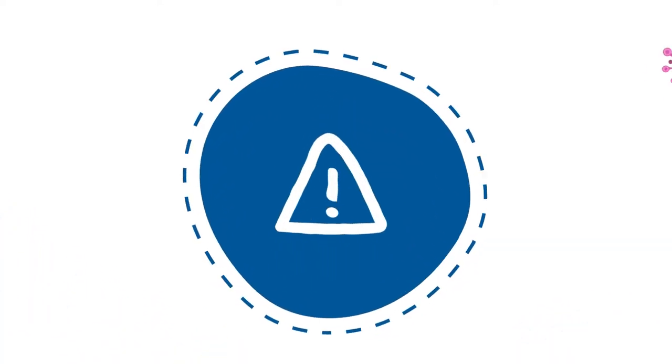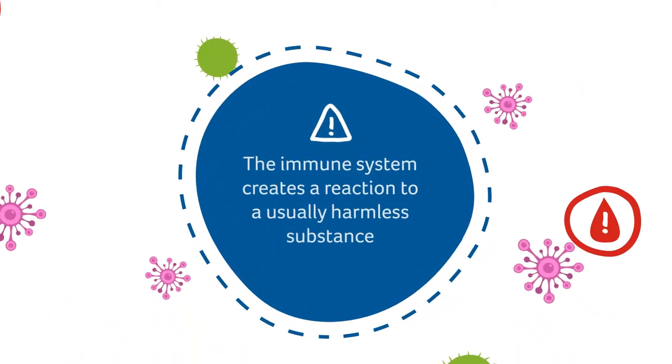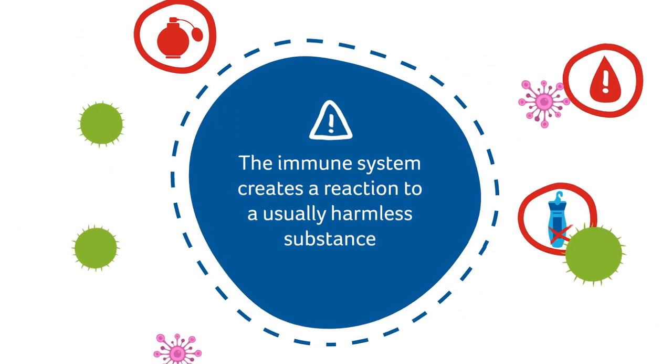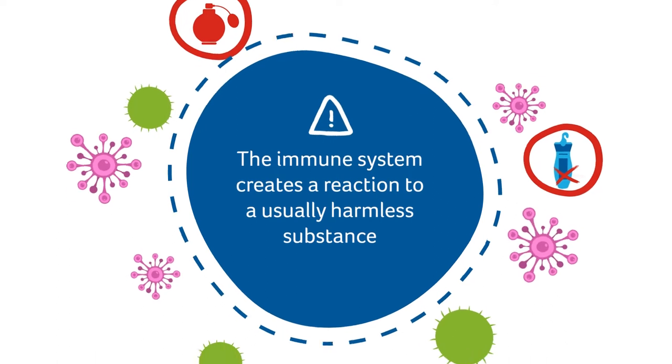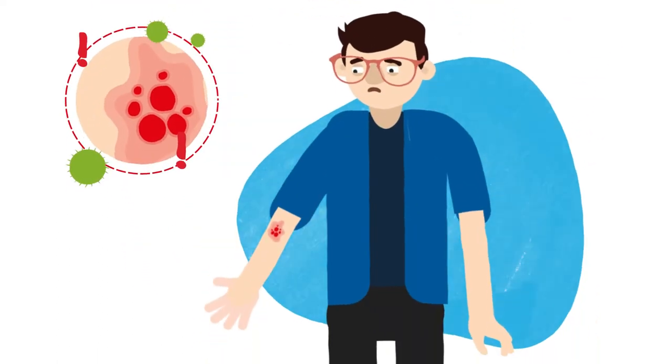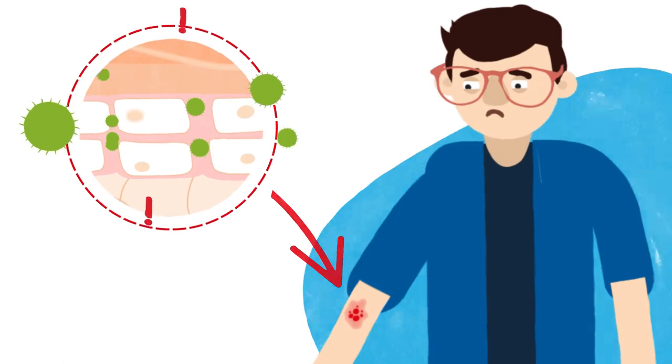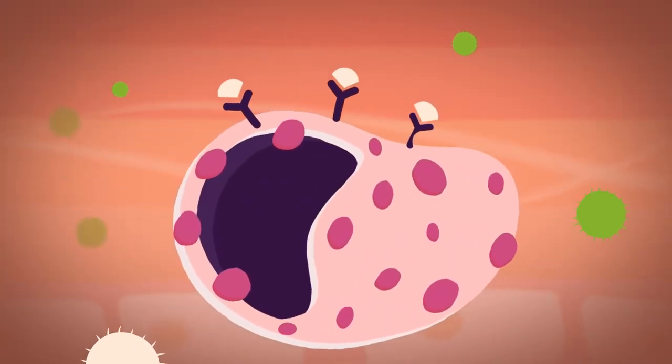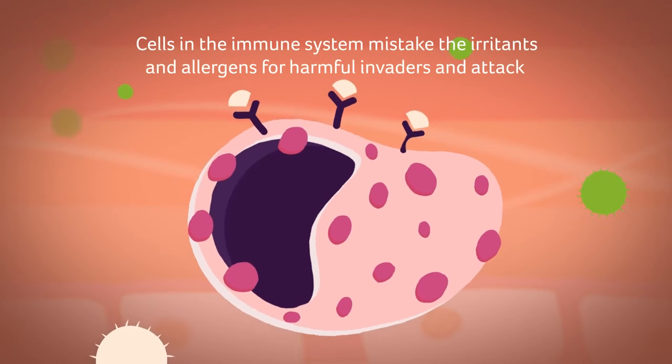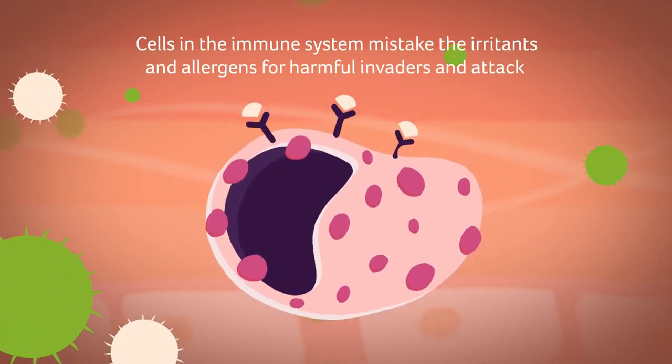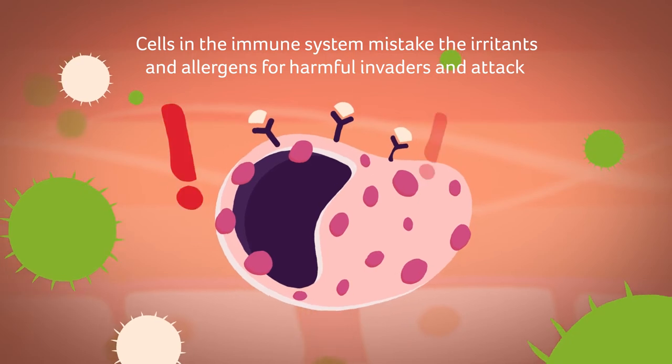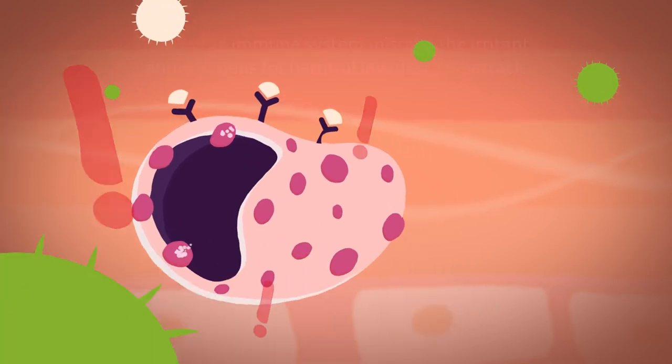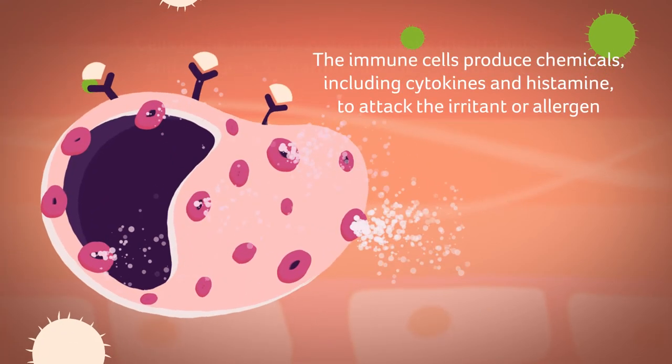Immune response in atopic eczema: There is an immune response where the body creates a reaction to a usually harmless substance such as pollen or animal saliva or fur. These irritants and allergens enter the body through the broken skin. They make contact with cells in the immune system, and these cells mistake the irritants and allergens for harmful invaders such as bacteria.